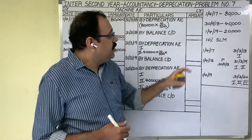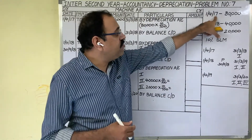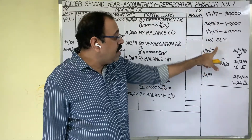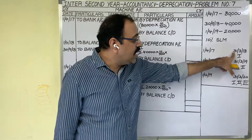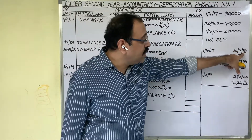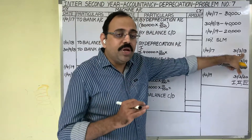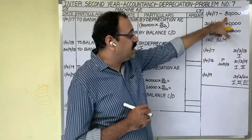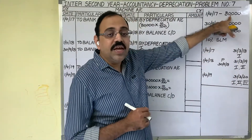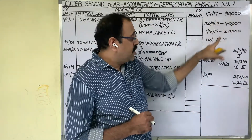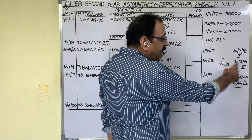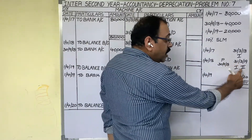Let us see the dates. They purchased the first asset on 1st April 2017, so the first year dates are 1st April 2017 to 31st March 2018. On 31st March 2018 we should provide depreciation on this first asset — the 80,000 rupees worth machine. For a full year we used this first asset in year 1. Come to the 2nd year: on 31st March 2019, we have 2 assets with us.